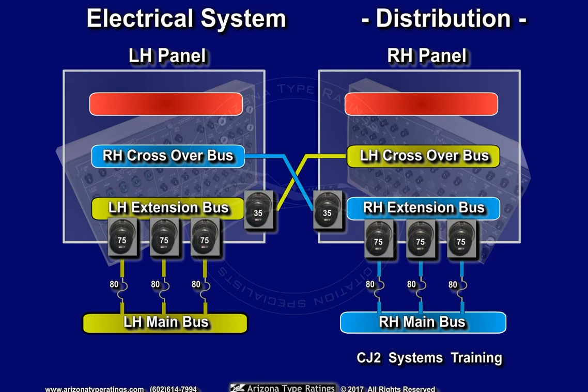This crossover arrangement allows systems circuit breakers to be located on the left circuit breaker panel and avionics circuit breakers to be located on the right circuit breaker panel, regardless of which main bus may be powering the specific breaker. The emergency bus is split between the left and right circuit breaker panels.